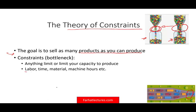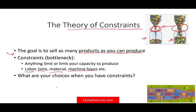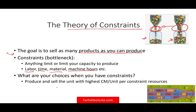A constraint could be labor — you don't have enough specialized labor — or time, material, machine hours, or any other production resource that limits you. So what are your choices when you have a constraint or bottleneck? How should you produce? The general rule is: you should produce and sell the unit with the highest contribution margin.